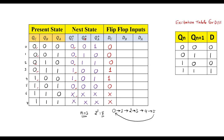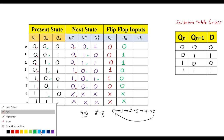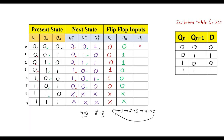Now we consider QB and QB+ to write flip-flop input DB. QB=0→0 gives DB=0; QB=0→1 gives DB=1; QB=1→1 gives DB=1; QB=1→0 gives DB=0; QB=0→0 gives DB=0; QB=0→0 gives DB=0; the remaining rows are don't care (X). For DA, considering QA and QA+: QA=0→1 gives DA=1; QA=1→0 gives DA=0; alternating 1,0,1,0,1,0, and the last two are don't care.